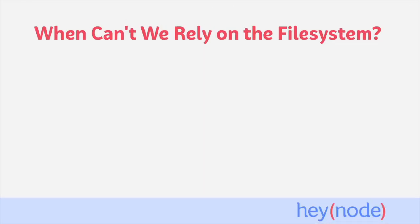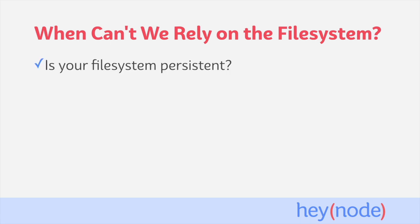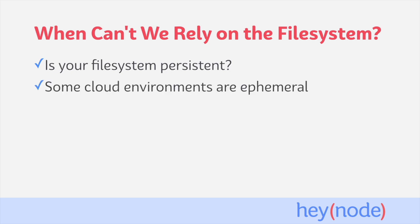Depending on where your code is running, we don't always have access to a persistent file system, which can make working with the fs module a little bit tricky. When developing locally on your own machine, it's trivial to save files to your file system and assume that they will still be there later — that's because our local machines offer a persistent file system. Heroku, for example, offers an ephemeral file system for its virtual machines. With an ephemeral file system, we're able to write files to the disk, but those files will disappear after the machine powers down. In Heroku's case, your machine powers down automatically in periods of low activity.